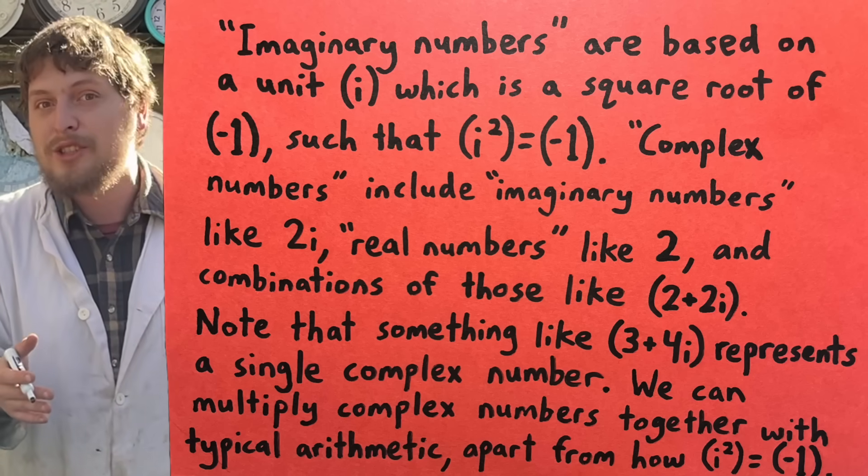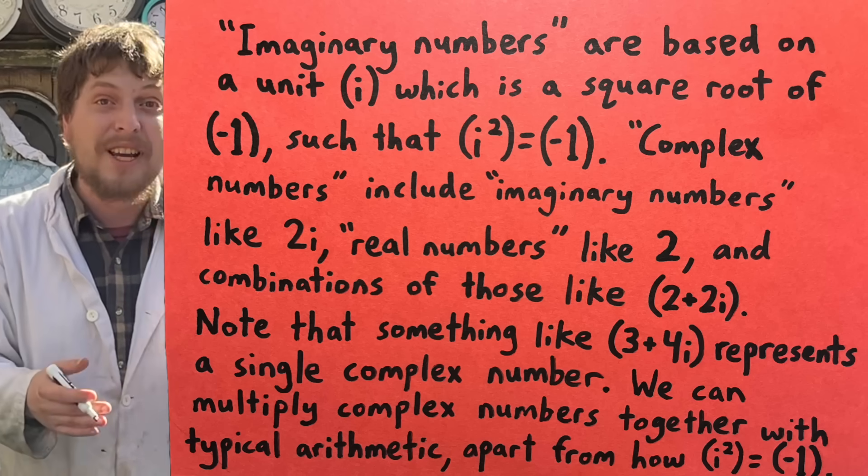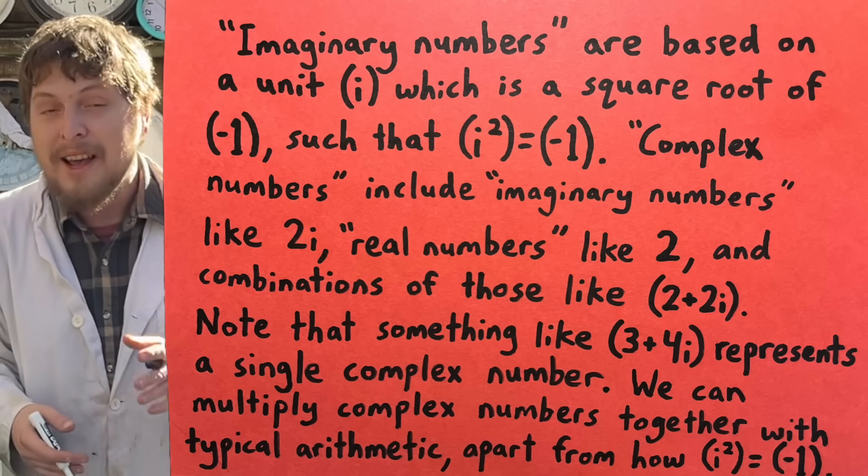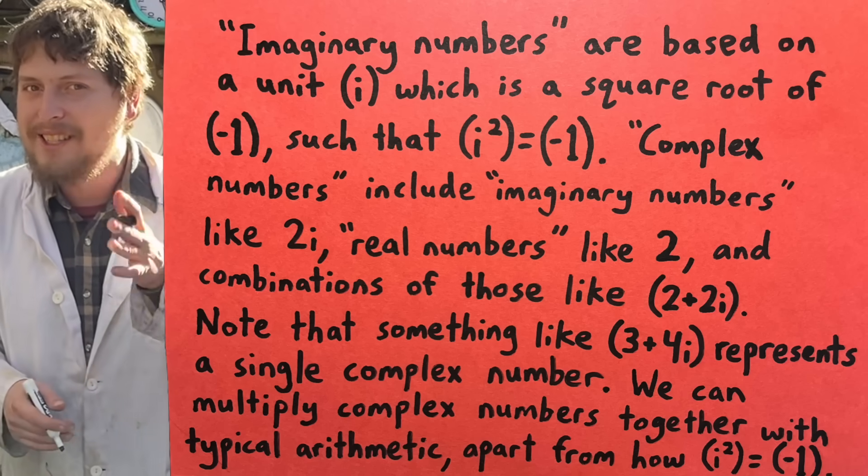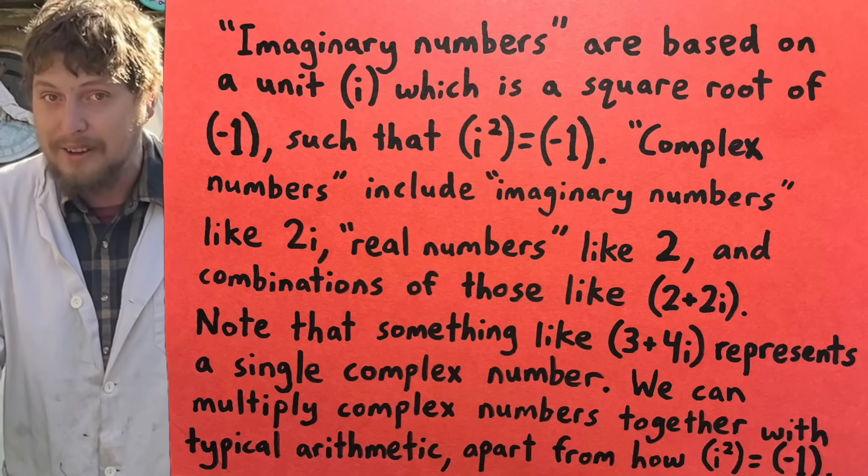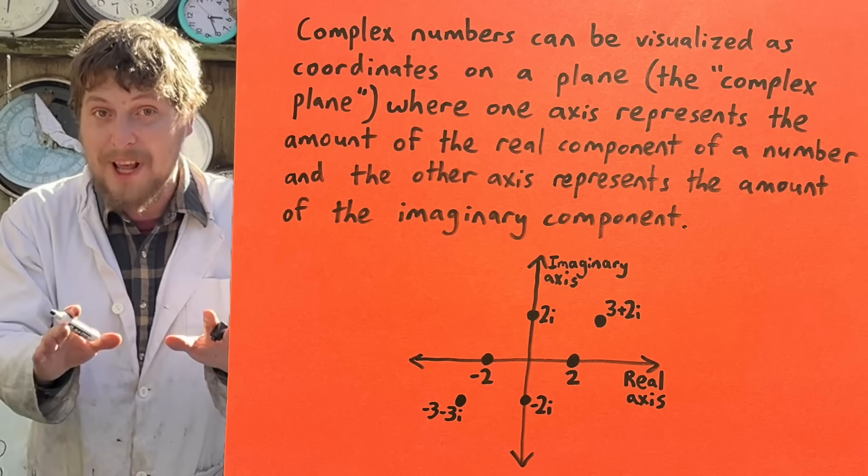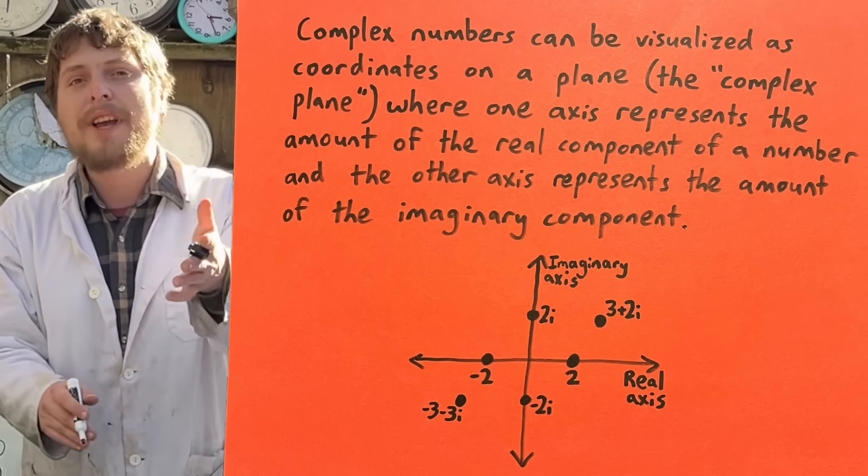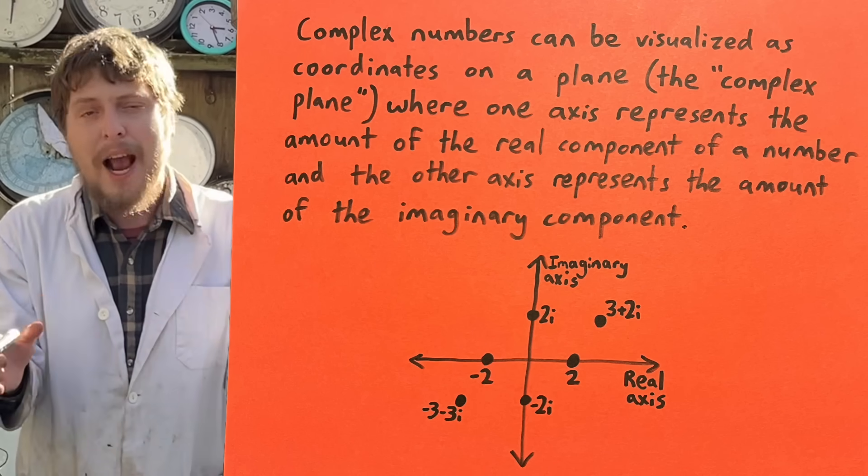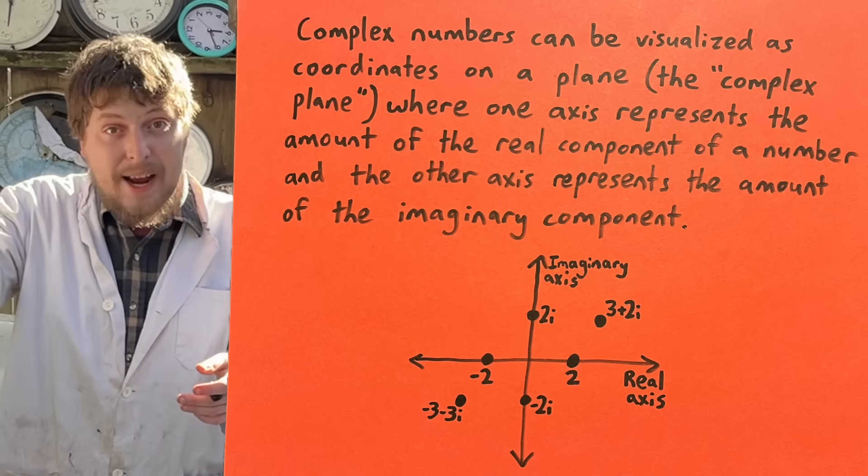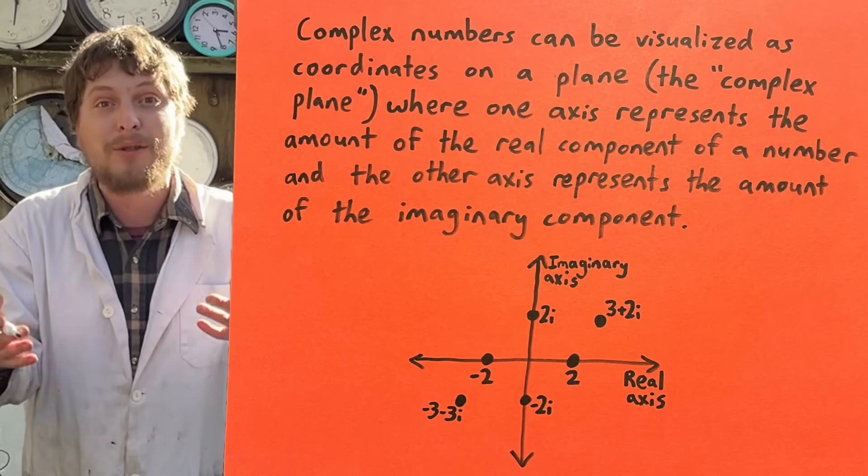an i squared, i being the imaginary unit, that i squared can be simplified as negative one. When we're dealing with complex numbers here today, we can imagine each of them as a point on this plane that has some amount of real,